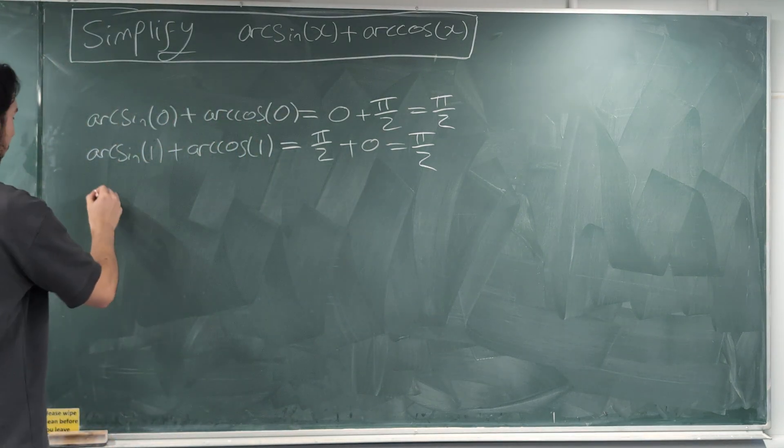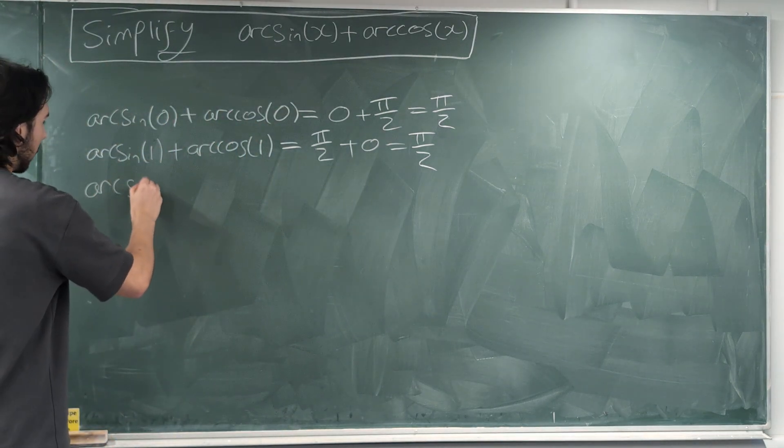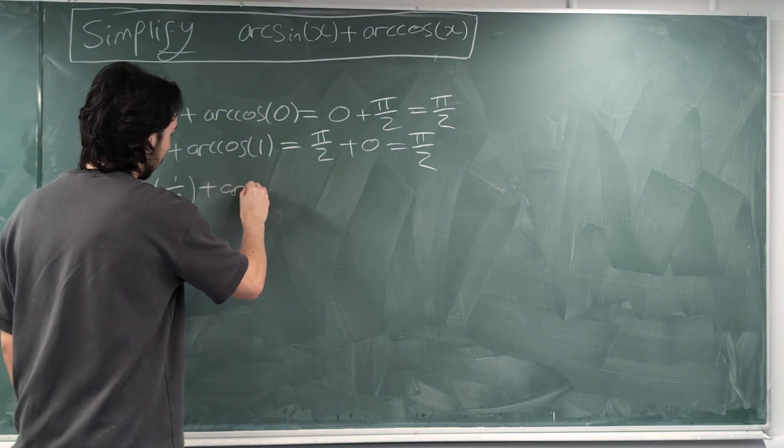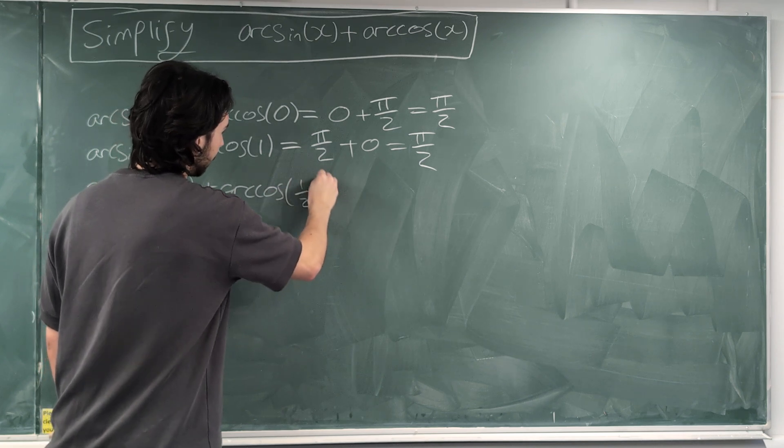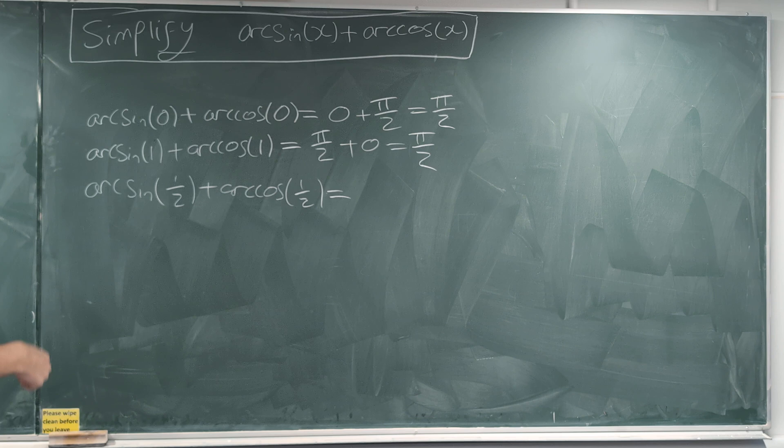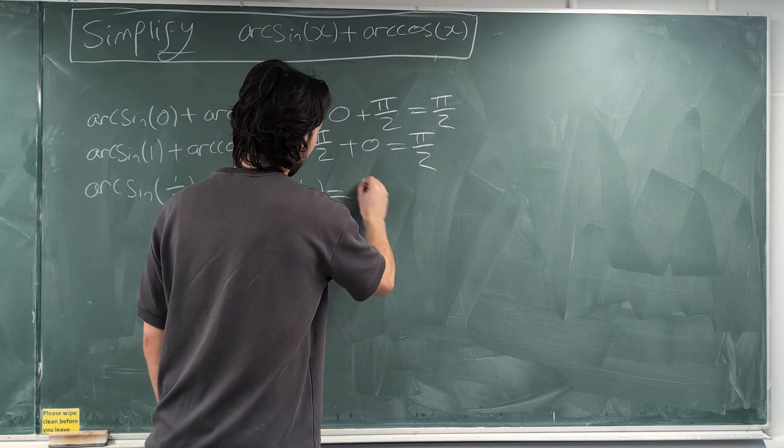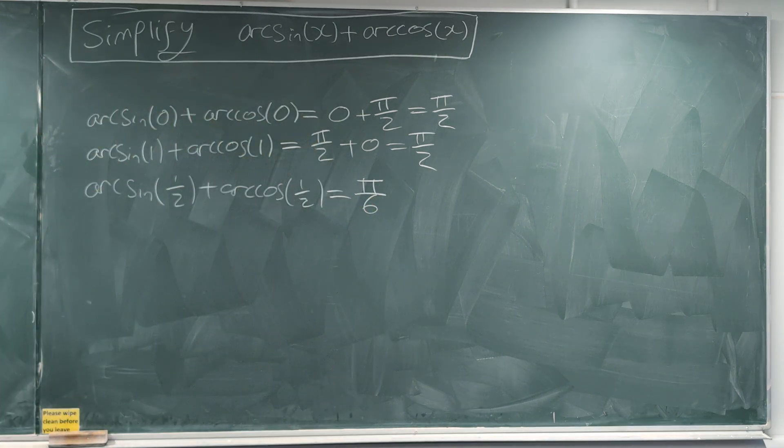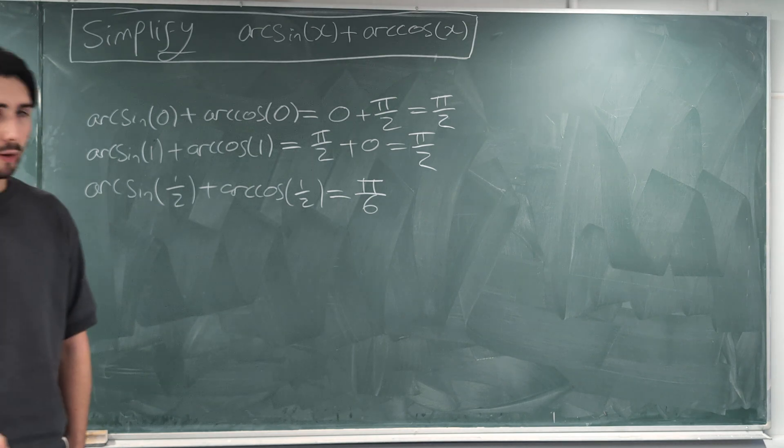All right, let's try one more number. What about arcsin(1/2) + arccos(1/2)? Well, what value of sine gives you 1/2? Well, 30 degrees, which is π/6. And what value of cos gives you 1/2? Well, 60 degrees, which is π/3.